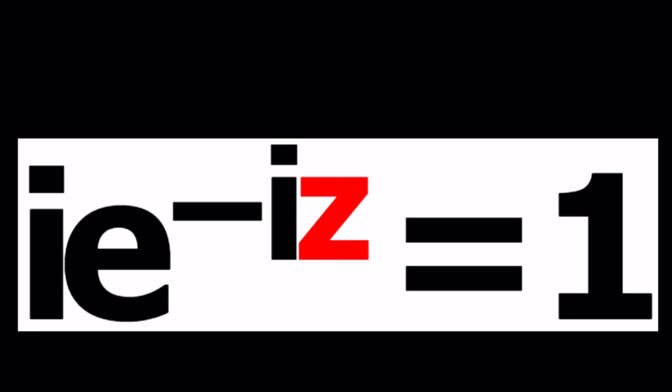We have i times e to the power negative iz equals 1, and we're going to be solving for z values. I'm going to be presenting two methods, and should we start with the first one? Sure, let's do that.